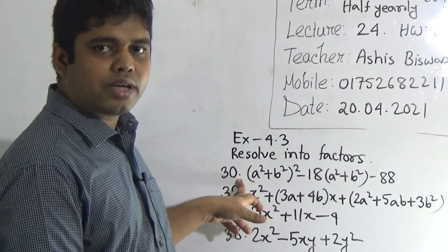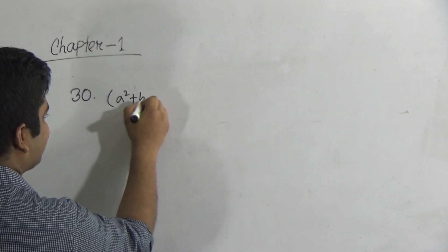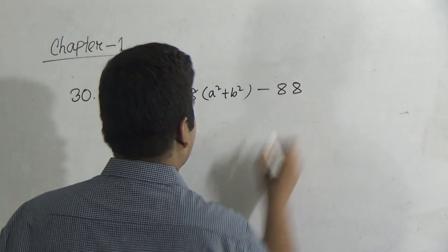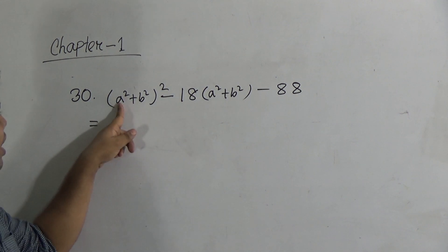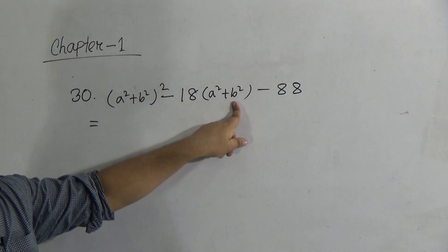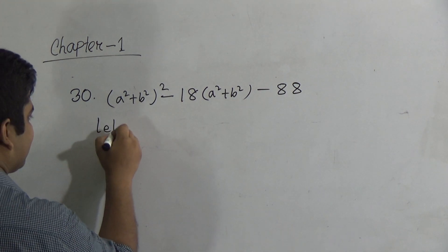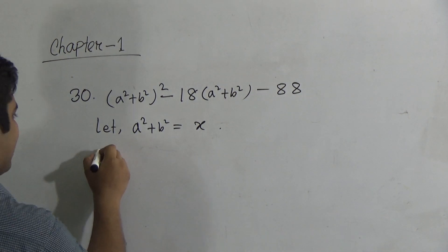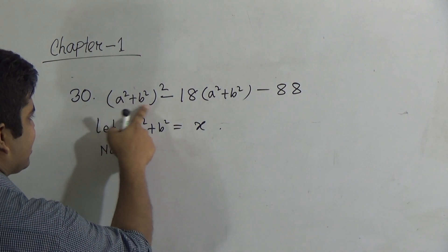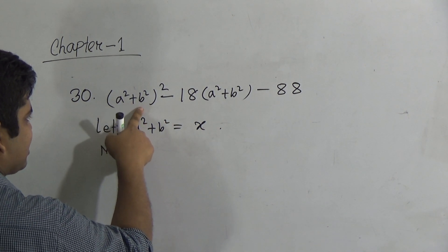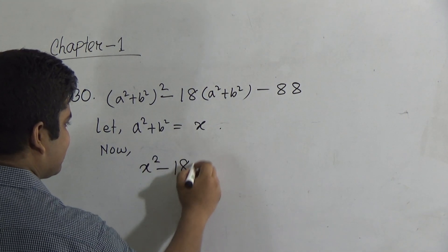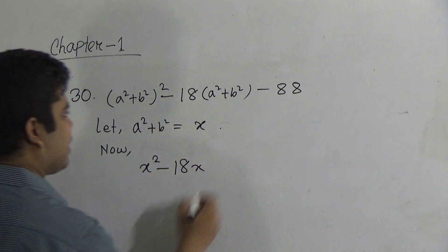At first we solve question number 30. The question is: (a² + b²)² minus 18(a² + b²) minus 88. Here, a² + b² appears twice. So at first we let a² + b² equal to x. In the place of a² + b², we write x. So the expression becomes x² minus 18x minus 88.